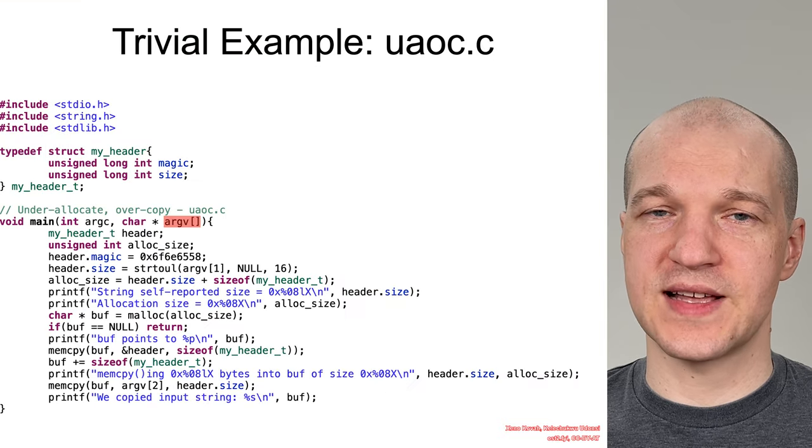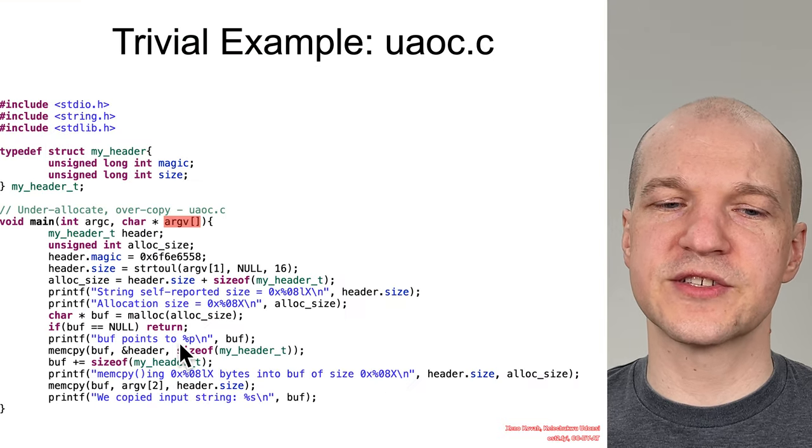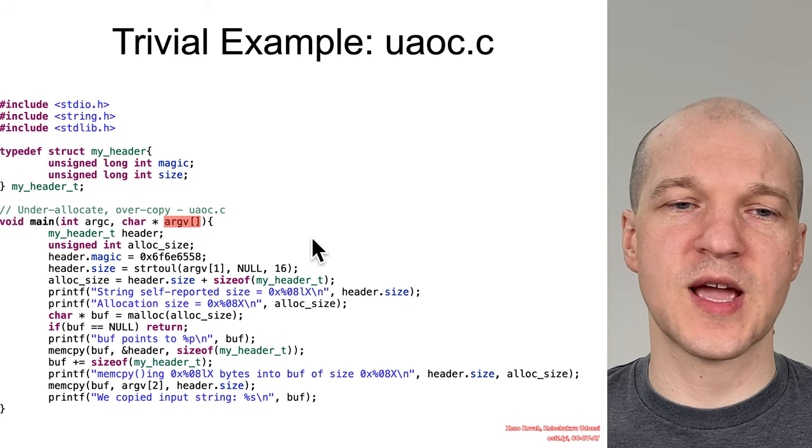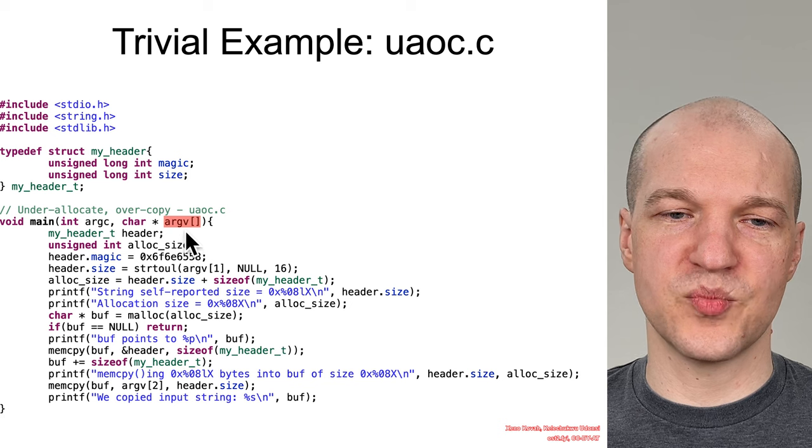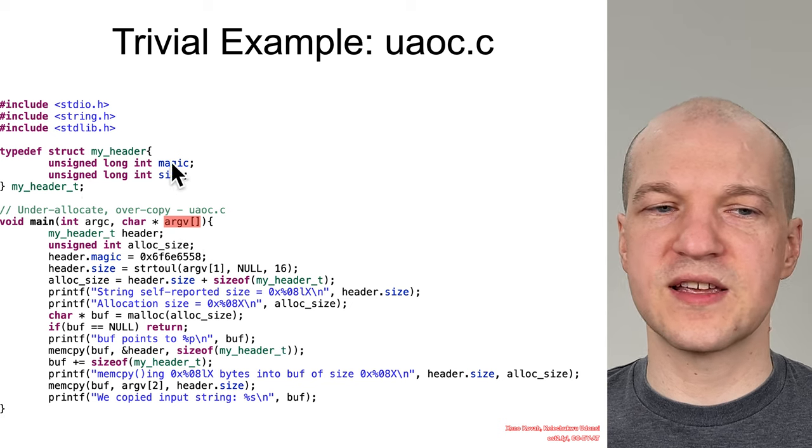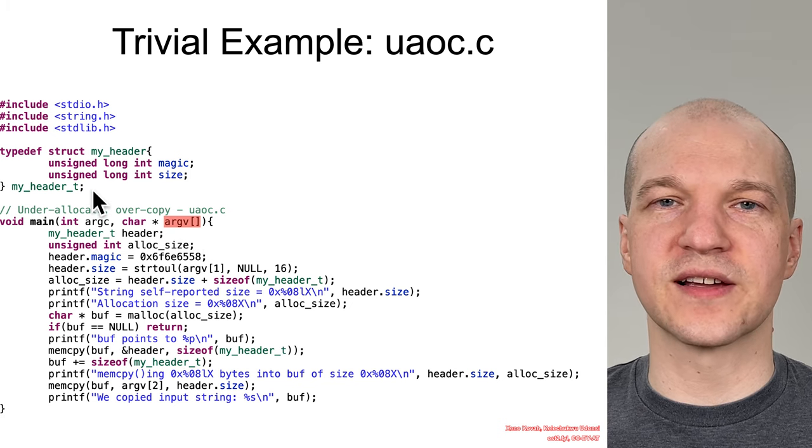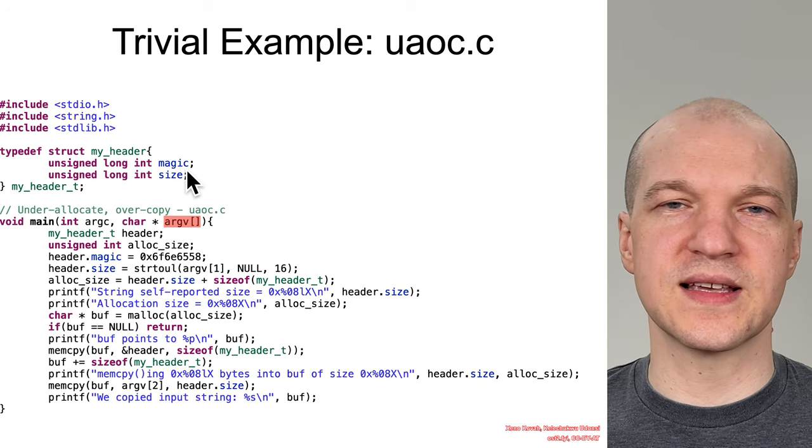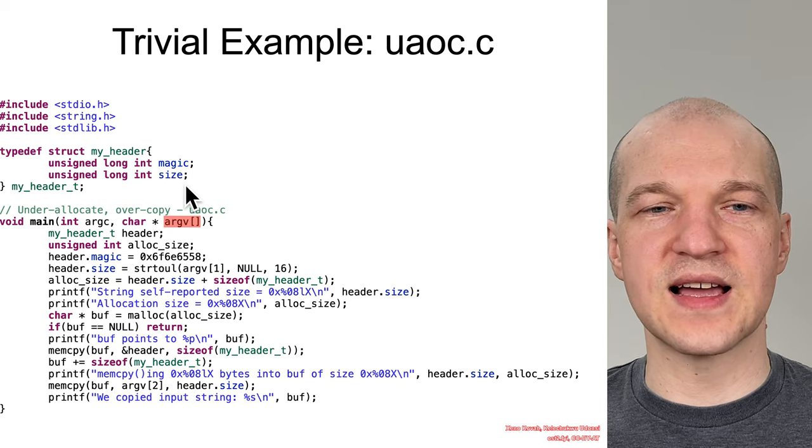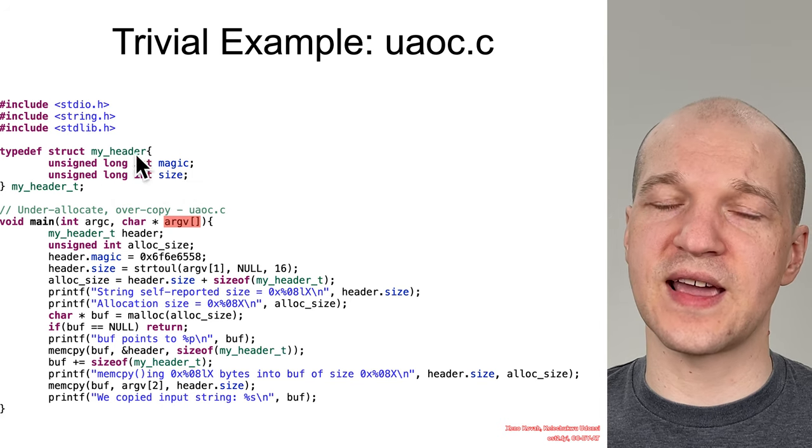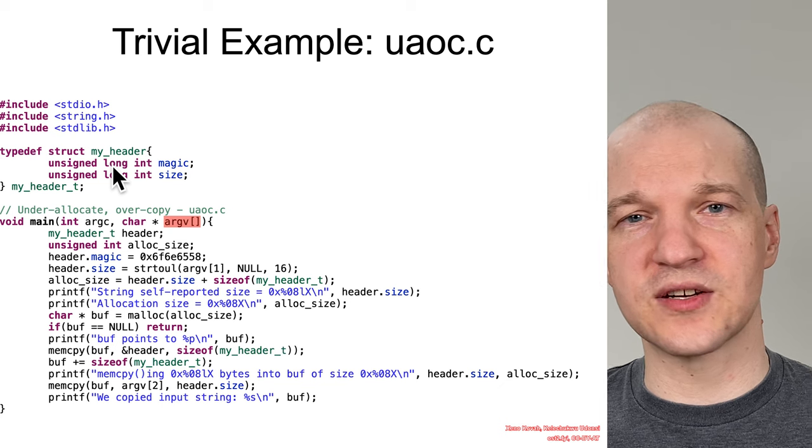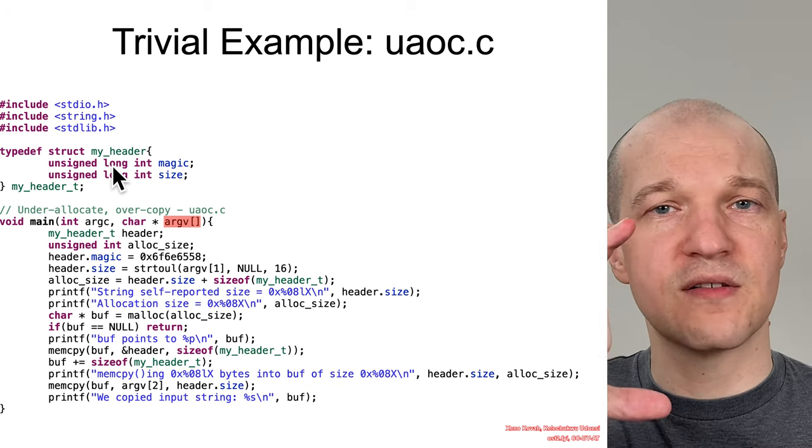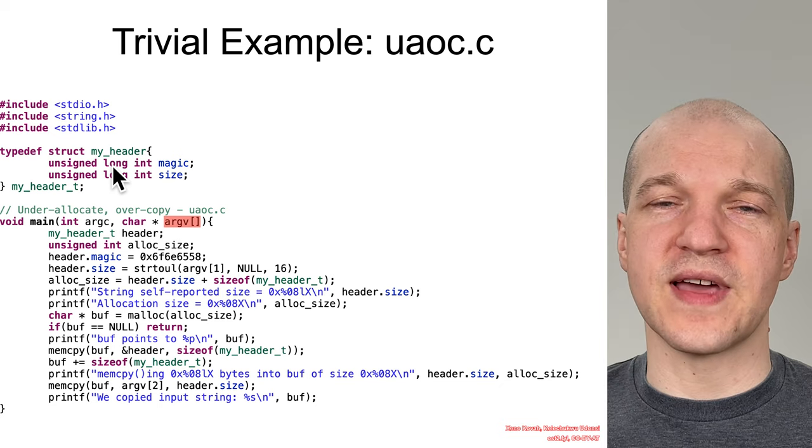So this time the trivial example is not so trivial just because I wanted to show a little bit more of how this might manifest itself in the real world. So we've got our attacker-controlled inputs of argv. We've got some notion of like a header that goes on a data structure, and the header has some magic number in it that says, this is what type of header I am, and it's got a size saying, here's the data that I expect to have after my header.